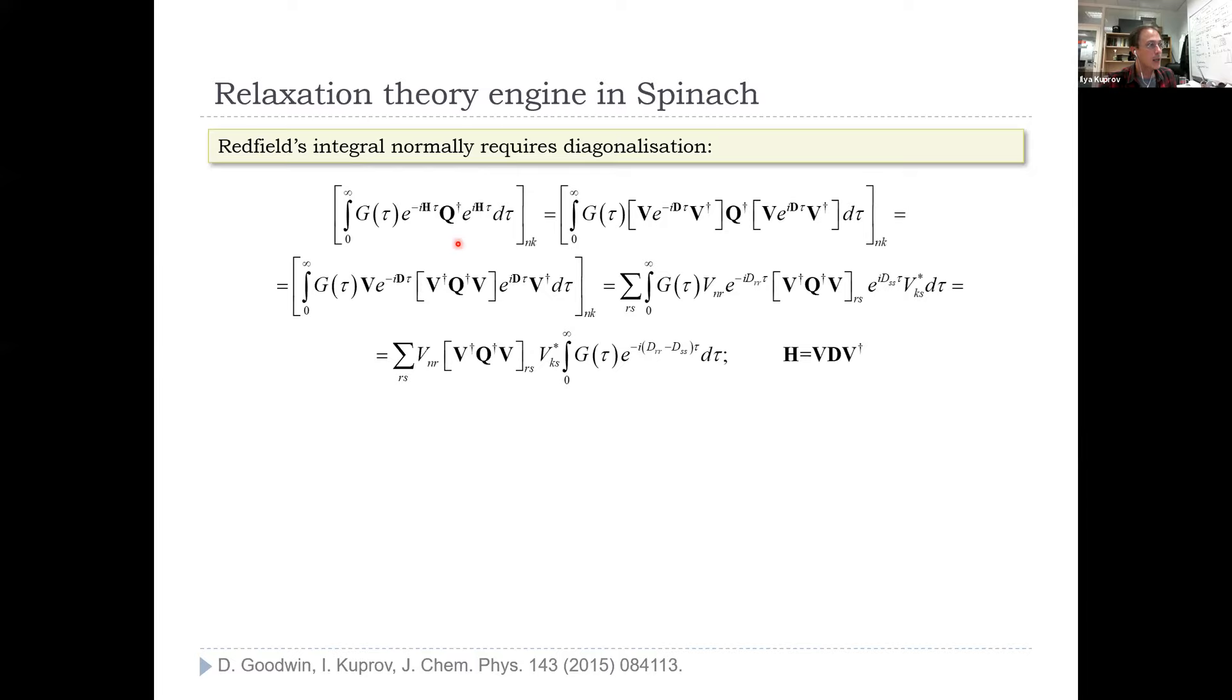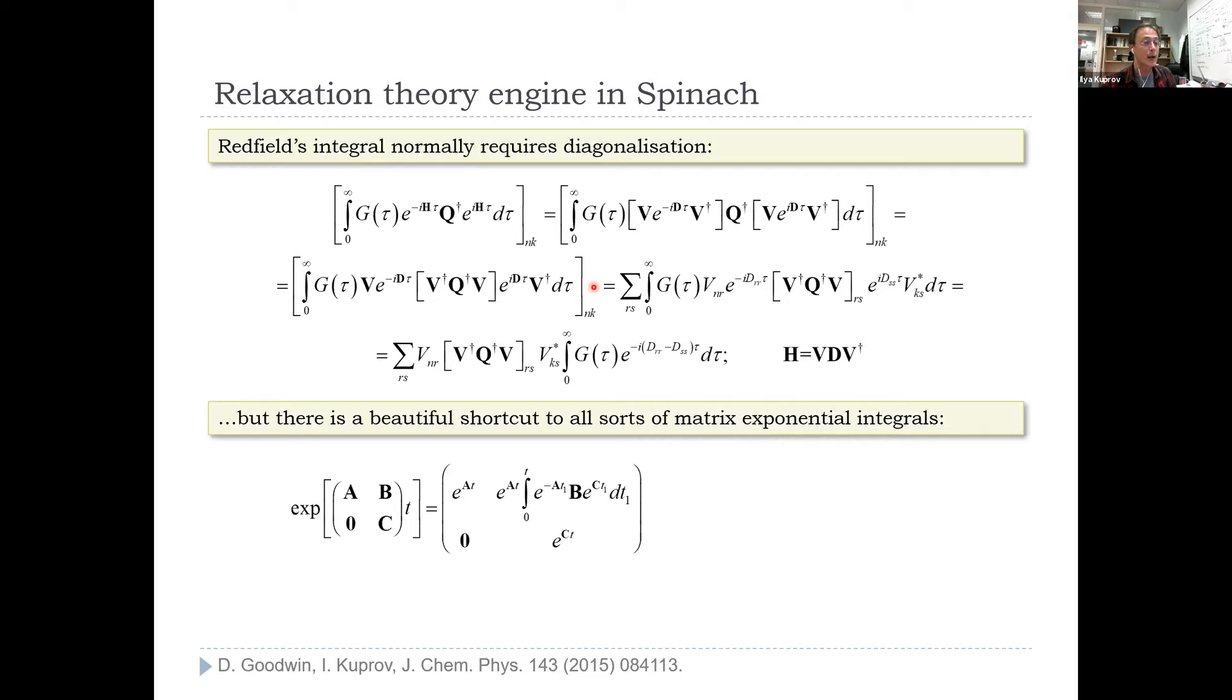If there are any quantum chemistry or spectroscopy people present, they would realize that it's a bloody expensive procedure. As soon as you've got more than 10 spins, the dimension of this Hamiltonian, it's a super operator, goes into the millions. Diagonalizing even 20,000 by 20,000 is a serious problem. Diagonalizing a million is completely unrealistic. The only way we could get Spinach to process phenylaziridine was to find the workaround.